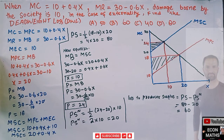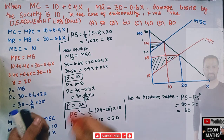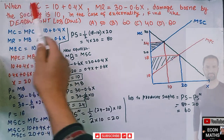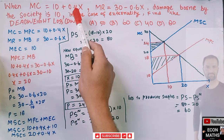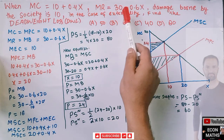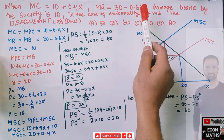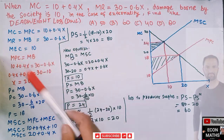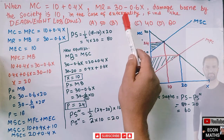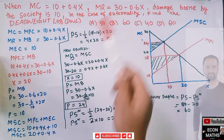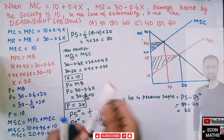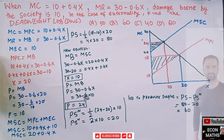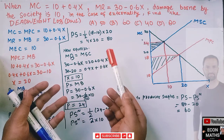In this video we will solve another problem related to the previous question. The question is: marginal cost is given as 10 plus 0.4X, marginal revenue is 30 minus 0.6X, and damage borne by the society is 10. In the case of externality, find the dead weight loss. The options are 50, 60, 40, or 80.